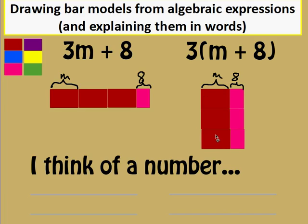Okay, so you can see that we've copied m plus eight down three times and in the brackets we had m plus eight and then all of that was being times by three. So turning these then into words or explain them in words.